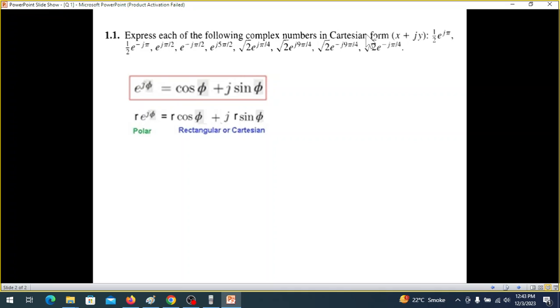So that is what we have to write in Cartesian form. This one, half e^(jπ) can be written as half (cos π + j sin π). And when we solve this with the calculator, we'll get value of cos π as minus 1, and we'll get value of sin π as 0. And the final answer will be negative half.